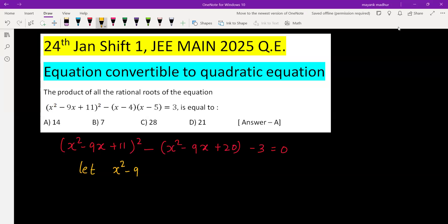So what we can do here is we can assume x² - 9x + 11 equal to t, so that this term can be t². When you're considering this as t, the first term will be t², then this term you can break 20 as 11 plus 9. So this will be t plus 9. So t² - t + 9 - 3 is equal to 0.